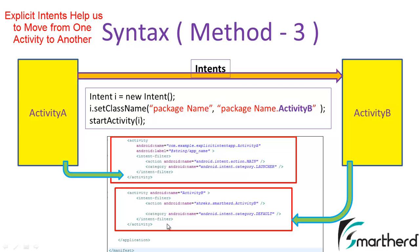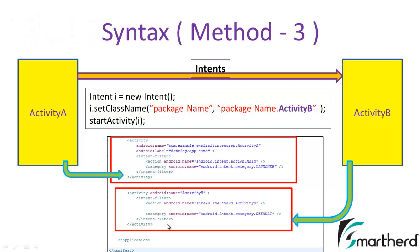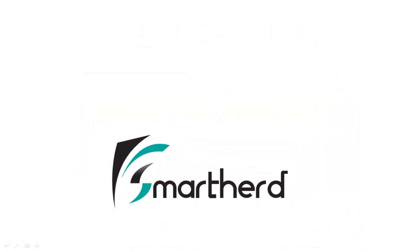Explicit intents are used when you know the specific activity you want to perform. Don't worry about implicit intents — I will talk about that topic later on. For now just focus on explicit intents. In the next tutorial I will show you the code for explicit intents. Stay tuned, this is Shrakes from SmartHerd signing off — please subscribe to my channel, leave a comment, and do share the video. Thank you.